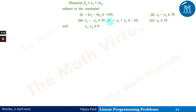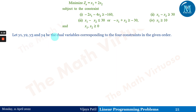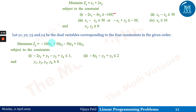Moving ahead, let y1, y2, y3, y4 be the dual variables corresponding to the four constraints in the given order. The original problem had three constraints, but because the second was an equality we converted it into two, giving four constraints total. Since the primal is minimization, the dual becomes maximization. The dual objective function is: max Z = minus 160·y1 plus 30·y2 minus 30·y3 plus 10·y4.